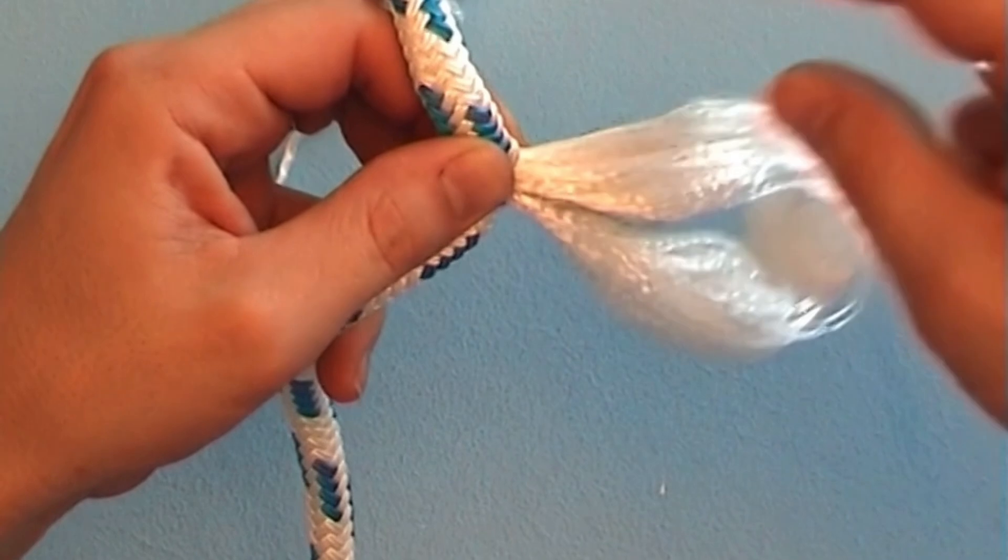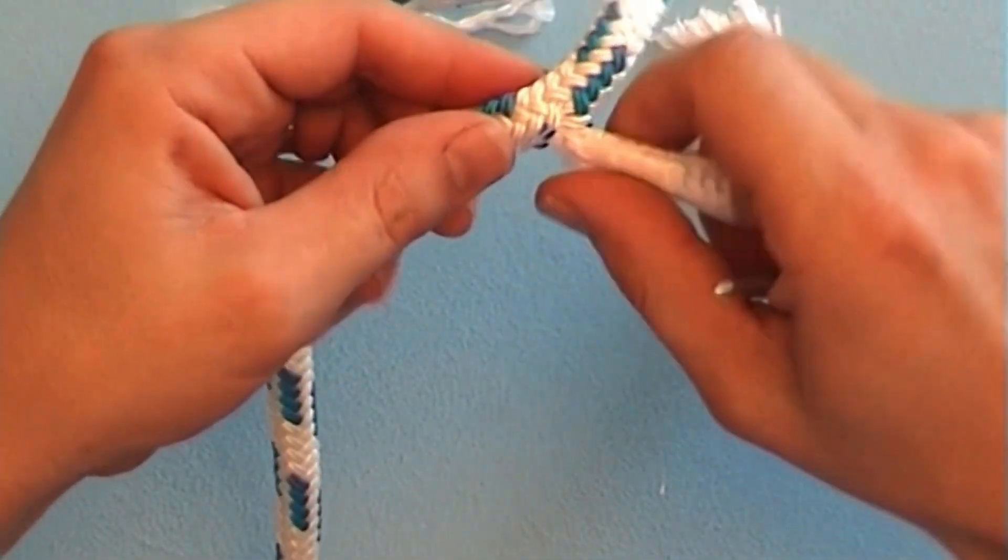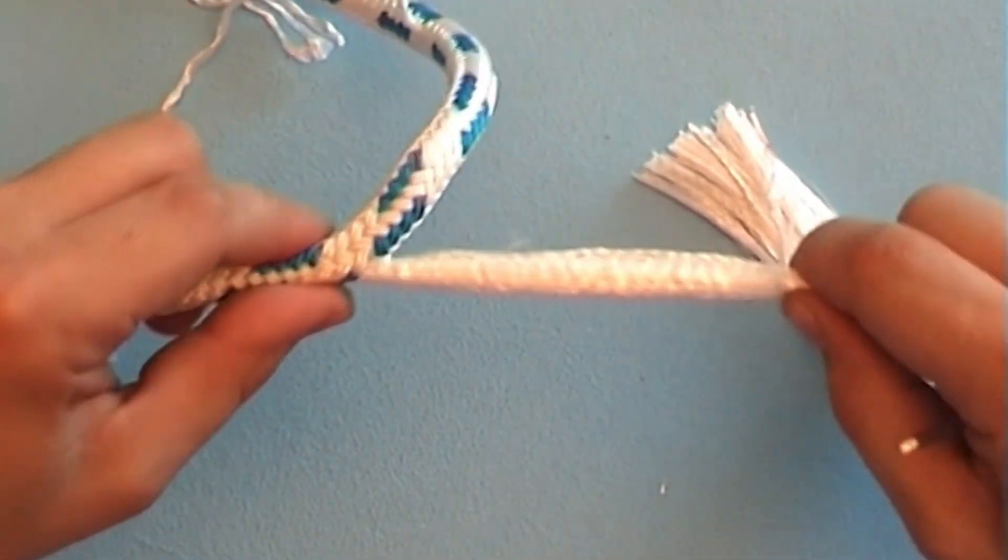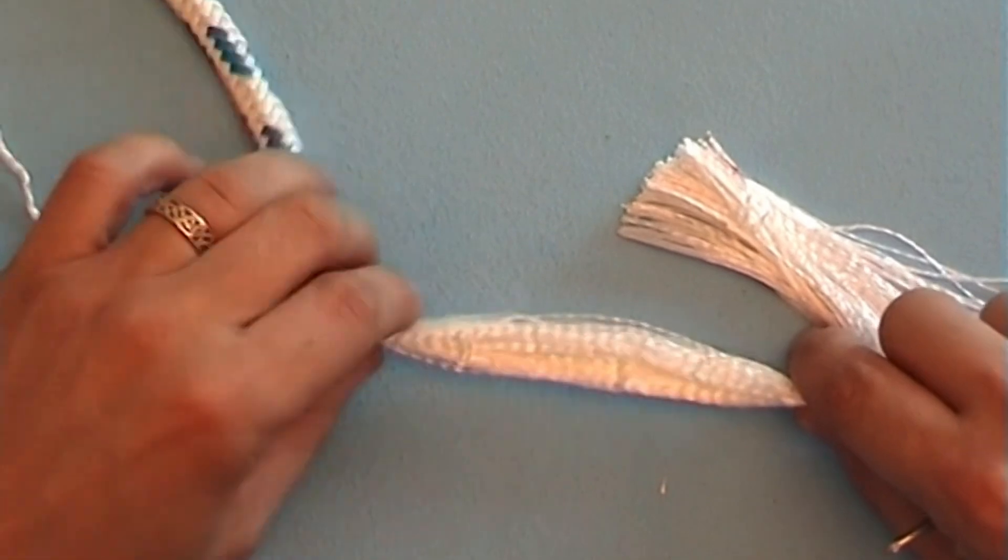Pull the core out all the way from the end. Then hold it firmly at the exit point and pull it out a bit from the other side as well.